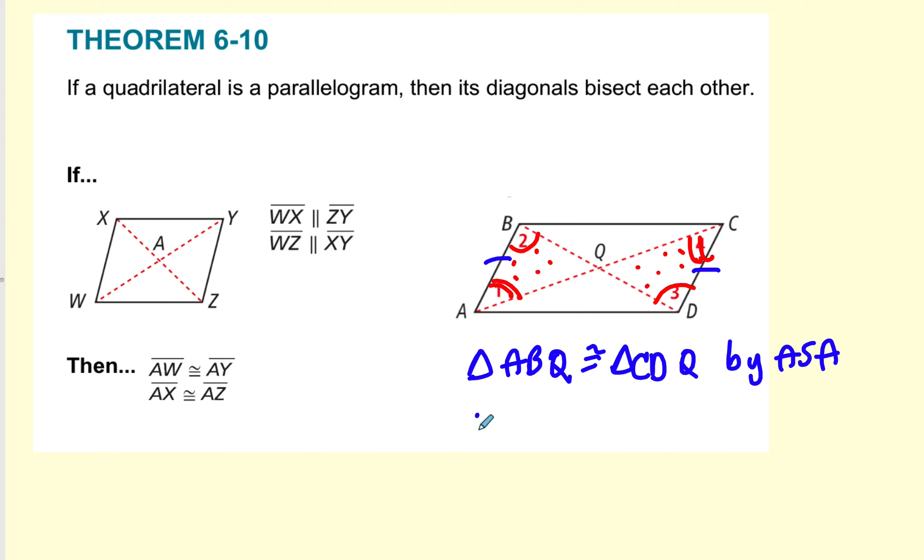And now I have BQ congruent to DQ. BQ is now congruent to DQ. So that makes that diagonal cut in half. And I also know that AQ is congruent to QC. And these are, that'll make this congruent to this. So that got cut in half. And this is all by corresponding parts of congruent triangles are congruent.